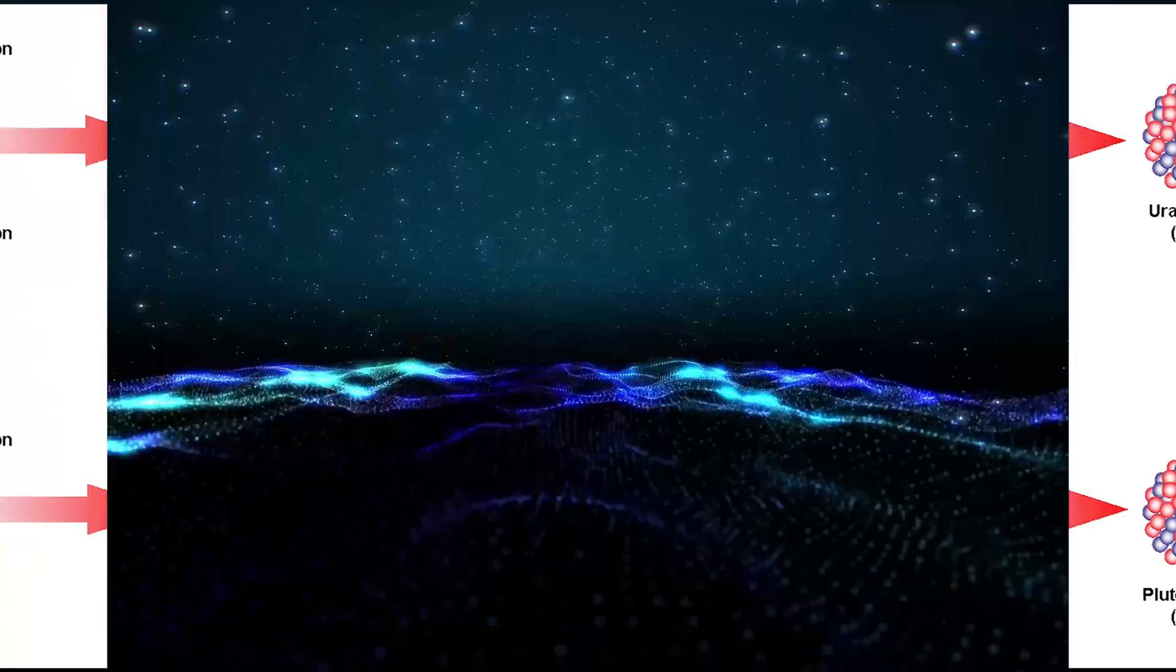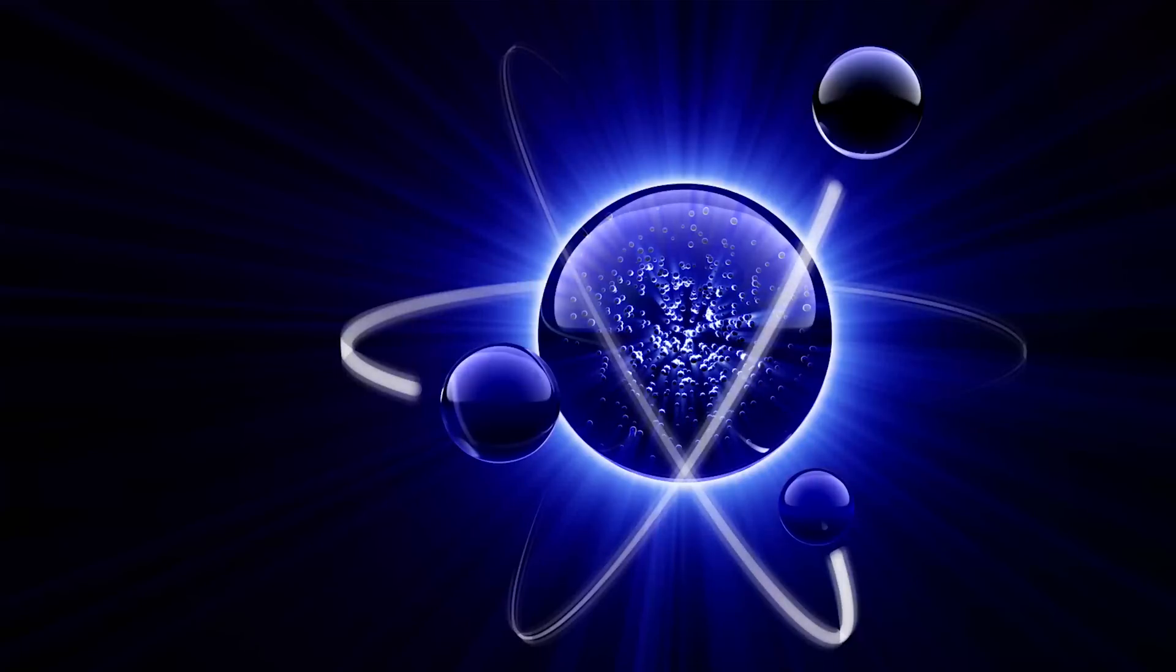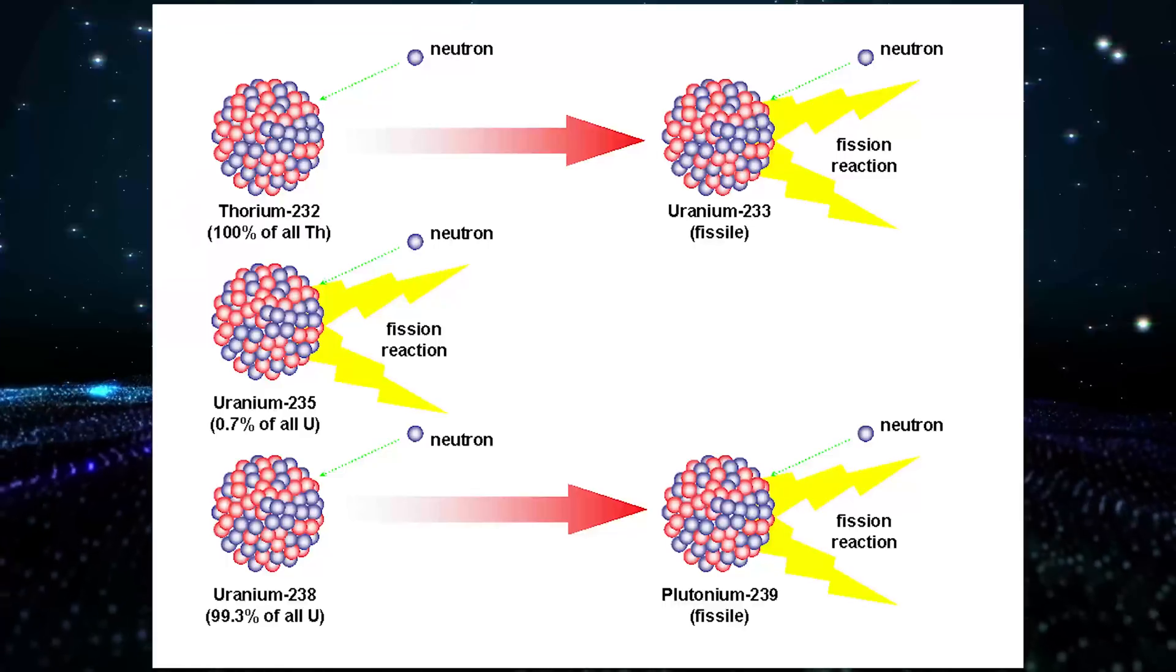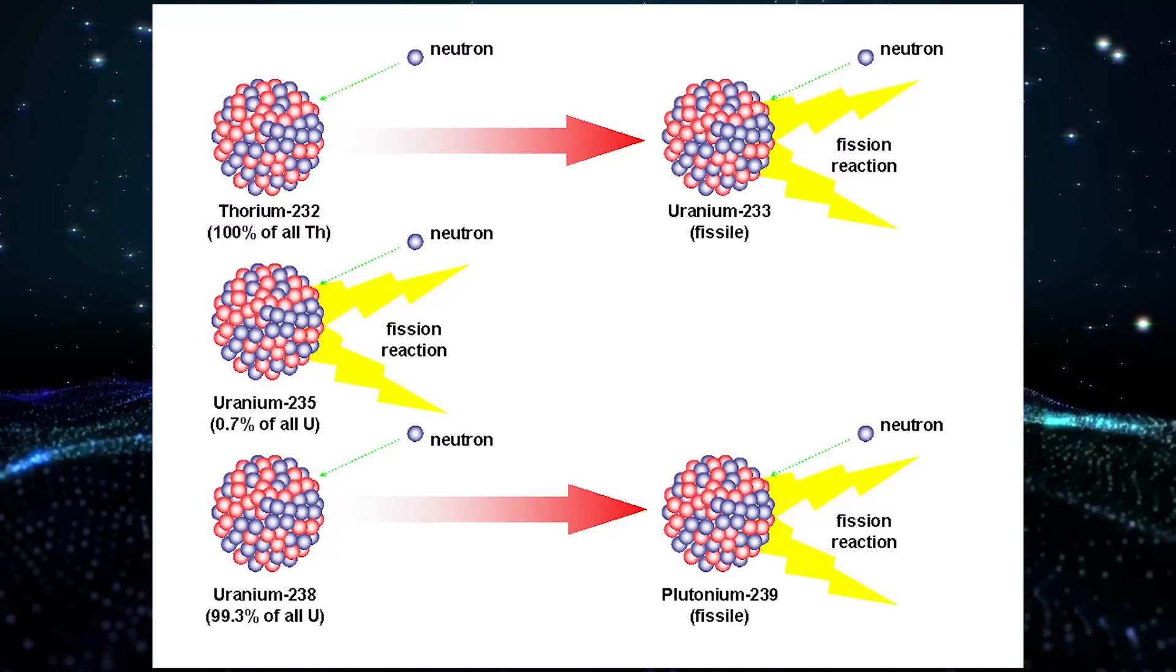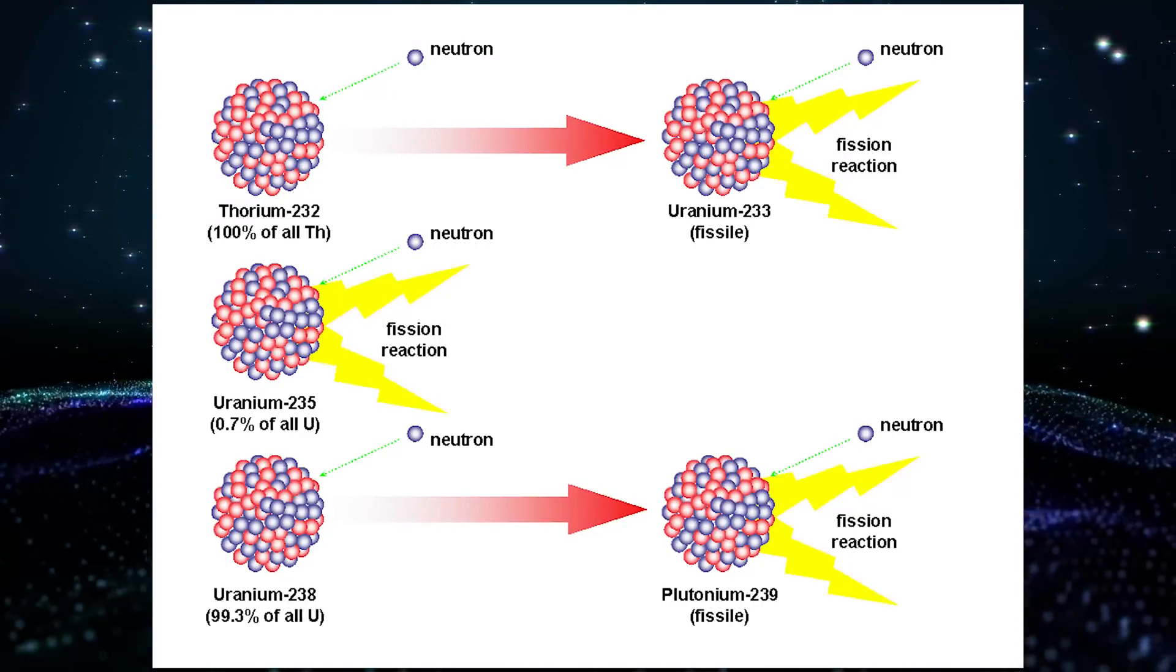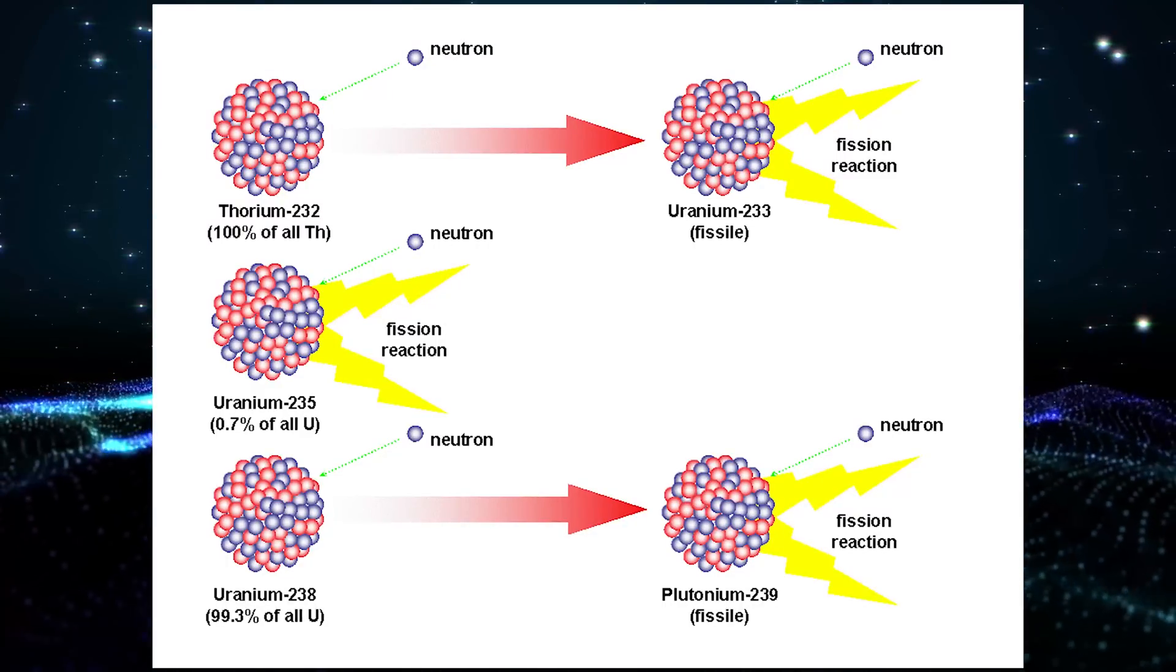That fissile material splits when hit by neutrons and releases a large amount of energy and several new neutrons as well. Those neutrons, in turn, cause more thorium to decay into uranium, and the cycle continues.